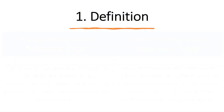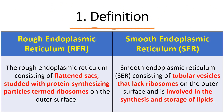The first difference is the definition. Rough endoplasmic reticulum consists of flattened sacs studded with protein-synthesizing particles called ribosomes on their outer surface, which is why it looks rough. Smooth endoplasmic reticulum has tubular vesicles that lack ribosomes — ribosomes are absent on the outer surface — and it is normally involved in the synthesis and storage of lipids and proteins.